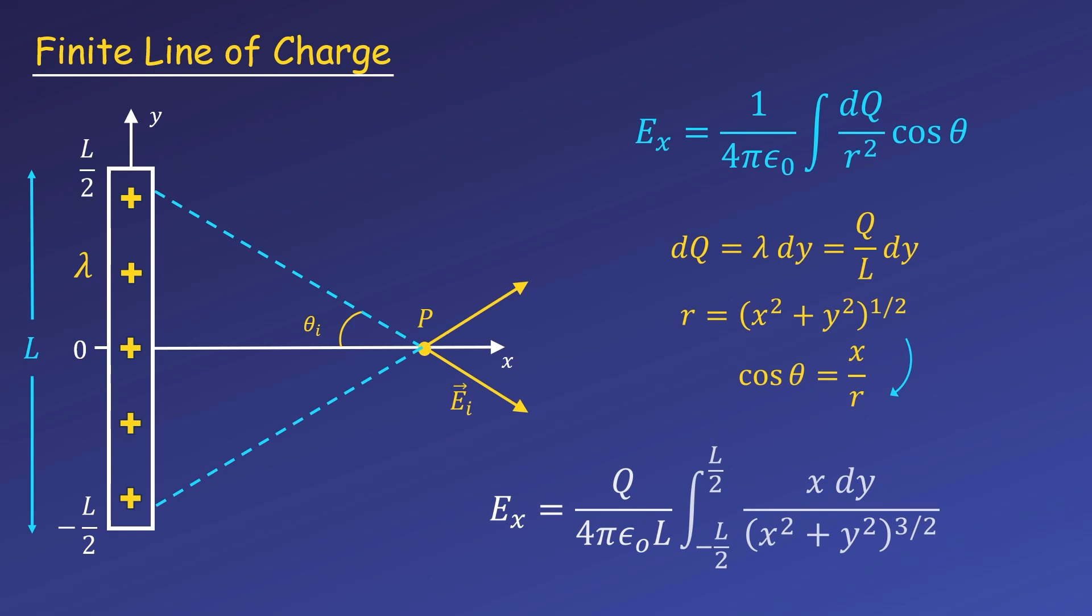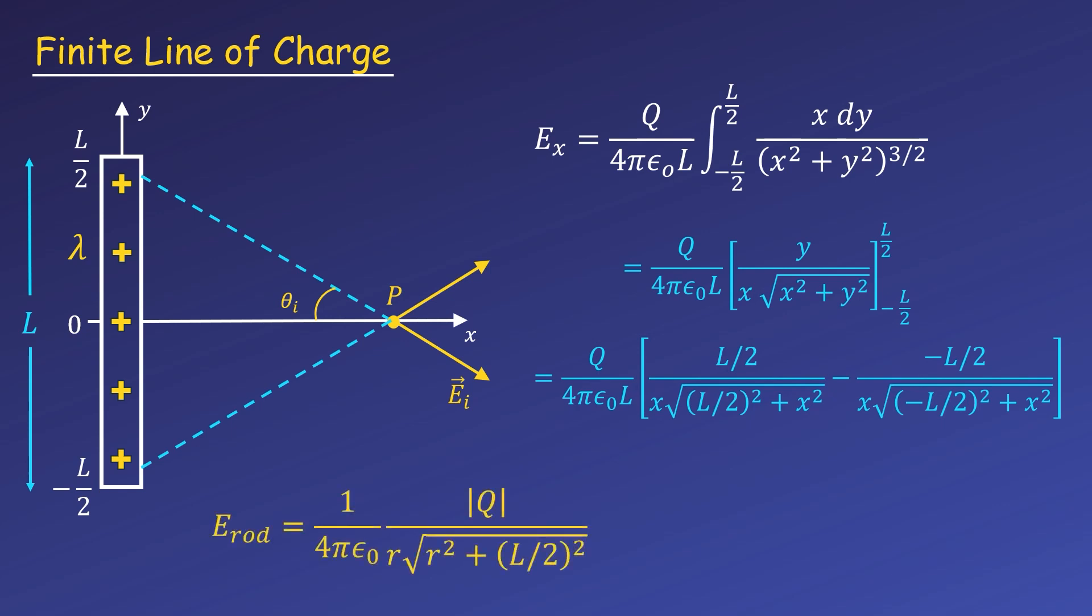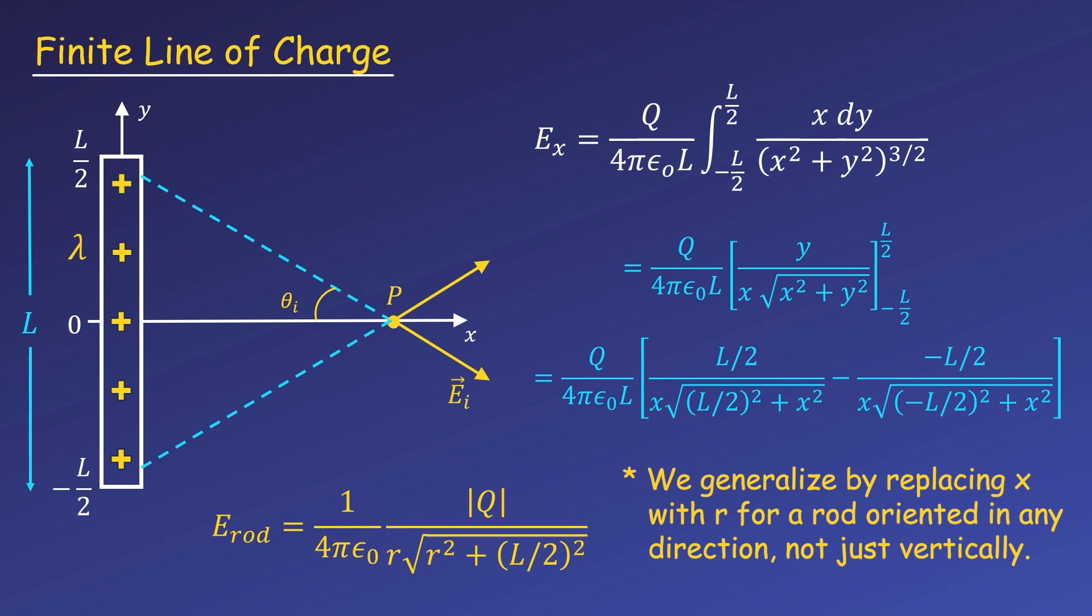Plugging this in, we get the following integral. The total charge and total length are constant, or stay the same, so they come out of the integral. We have x in the numerator from the cosine and dy from substituting for dq. Then, r squared and the r from our cosine gives us r cubed, or x squared plus y squared, to the 3 halves power. This is either an integral you remember how to solve from calculus, or you can look it up in an integral table, which gives you the following. And then we evaluate at our limits. Our l from before cancels with the l from evaluating at our limits. Then, we essentially have two copies of everything in brackets, because the two negative signs will become positive. And the minus l over 2 becomes positive when it is squared. These two copies give us a factor of 2, which cancels the 2 in our limits. This is our final equation for the electric field of a finite rod or line of charge.